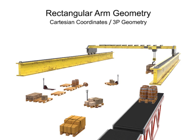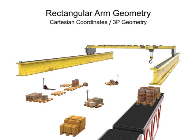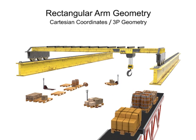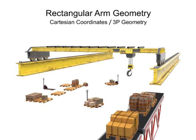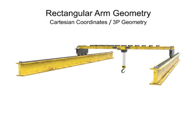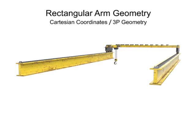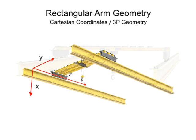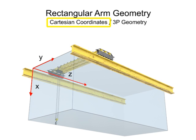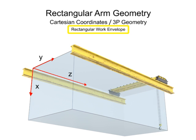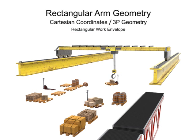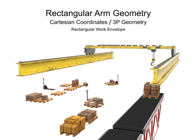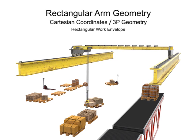Rectangular arm geometry robots can only move linearly in each direction. An overhead crane robot is a good example of this type of motion — it can move forward and backward, left and right, and up and down. Robotic arms that use Cartesian coordinate geometry generate a rectangular work envelope. Rectangular robotic arms have the simplest geometry and control system and are typically used in material handling operations.